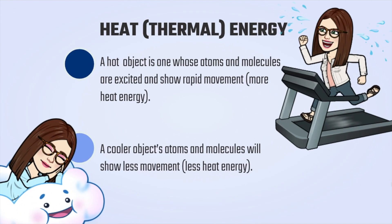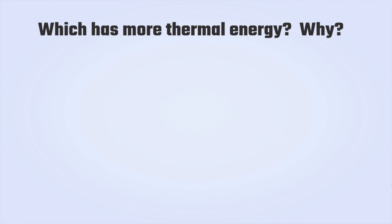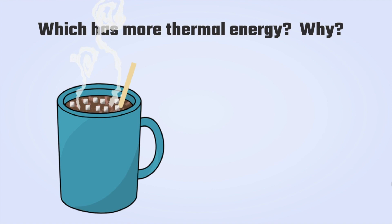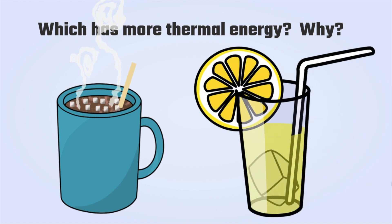Heat or thermal energy. A hot object is one whose atoms and molecules are excited and show rapid movement — more heat energy. My bitmoji up there running on the treadmill is showing you what a molecule looks like when it's hot. A cooler object's atoms and molecules will show less movement — less heat energy. So which has more thermal energy: a cup of hot cocoa or a cool glass of lemonade? Well, the hot cocoa has a lot of heat, making those molecules move around like crazy, so it has a lot of thermal energy.